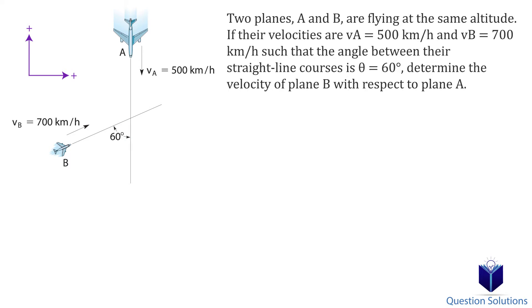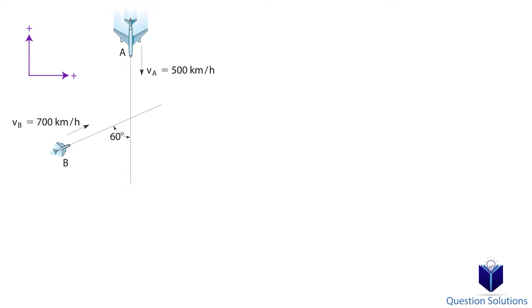Let's write the velocity of plane A in cartesian vector form. So we have negative 500j, negative because the plane is heading down and we chose up to be positive.